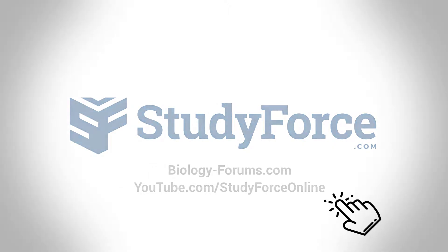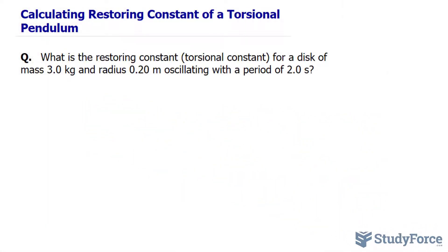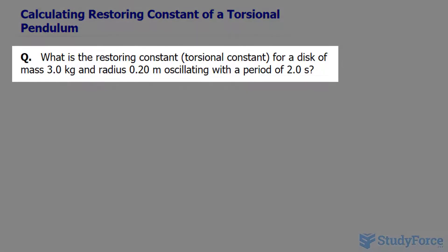In this lesson, I'll show you how to calculate the restoring constant of a torsional pendulum. The question reads, what is the restoring constant or the torsional constant for a disc of mass 3.0 kilograms and a radius of 0.2 meters oscillating with a period of 2.0 seconds?